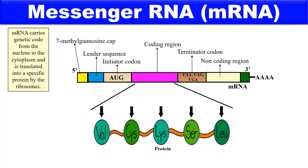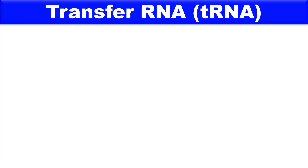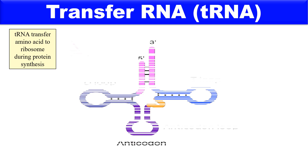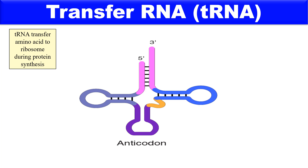The next type is transfer RNA, or tRNA, which transfers amino acids to the ribosome for protein synthesis. It forms about 3 to 15 percent of the total RNA content. The tRNA has a cloverleaf structure with two ends: the three-prime end and the five-prime end. At the three-prime end we have the CCA codon, which is the site for amino acid attachment, and at the five-prime end we have GUA.